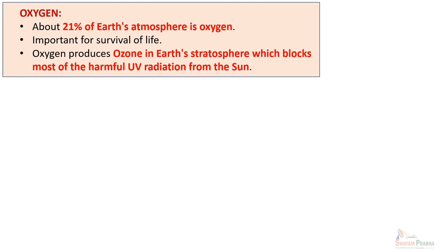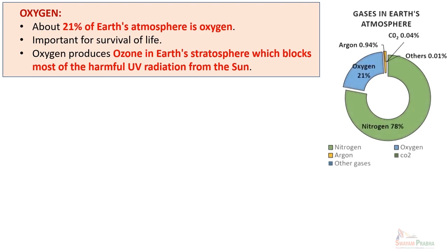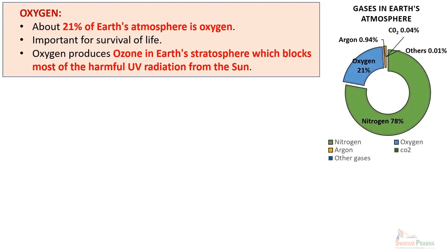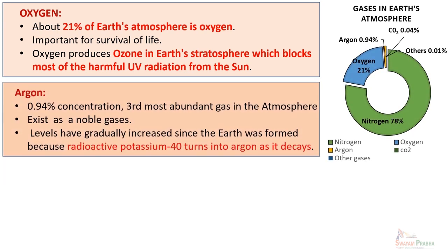This important gas is ozone, found in the atmosphere, which blocks most of the harmful UV radiations from the sun. This was only possible when molecules of oxygen were formed in the atmosphere. Together, nitrogen and oxygen — at 21% and 78% respectively — account for nearly 99% of the atmospheric composition.